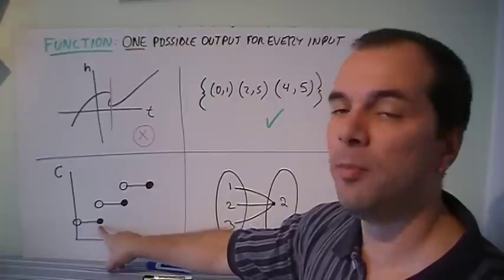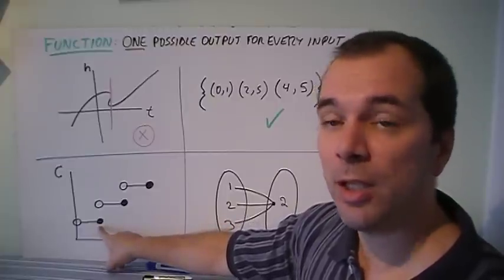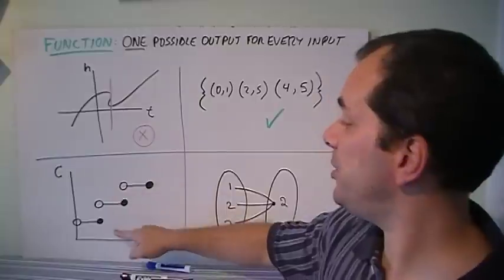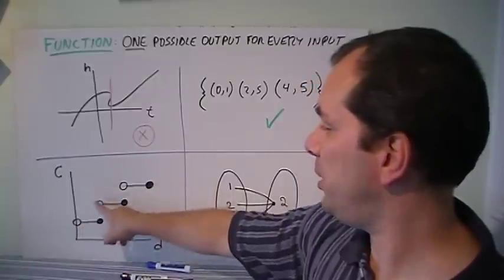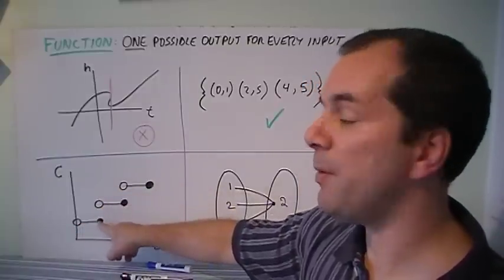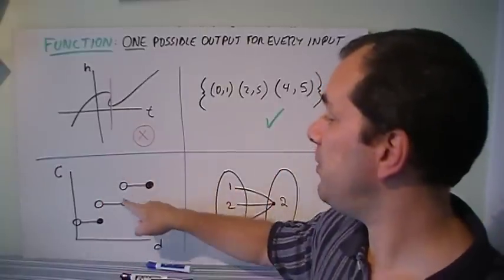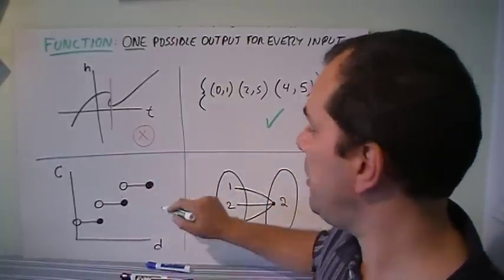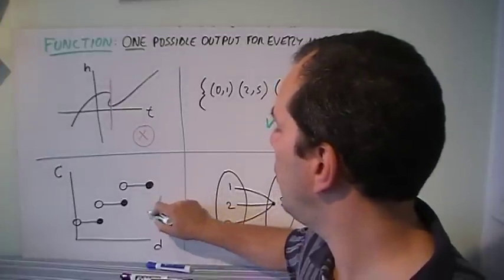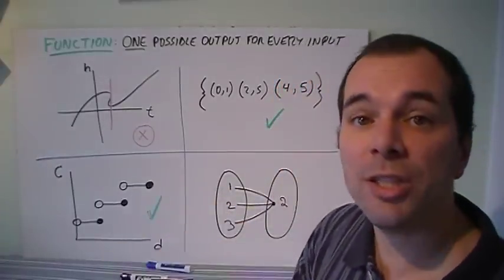So if I use a vertical line test here, I can see that at this point, these two line up. I'm not using this point, but I am using this point. So I'm only using one point for an output. So that's okay. And the same happens over here. So for every input, there's only one output and that means this is a function.